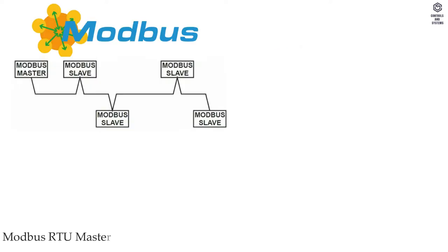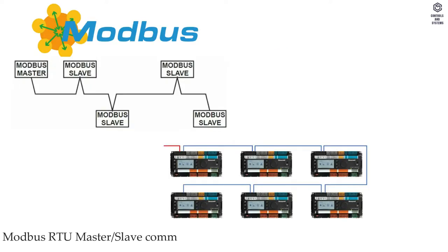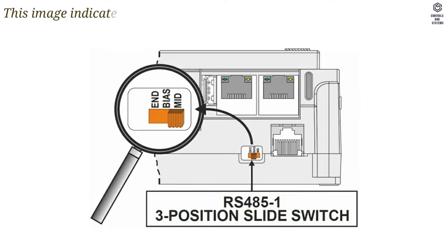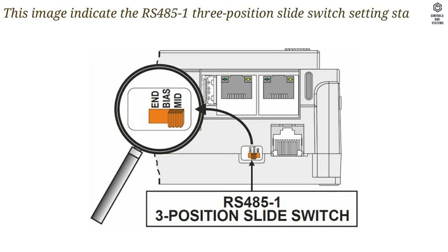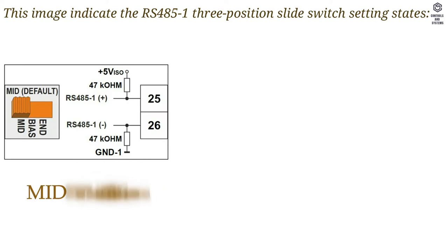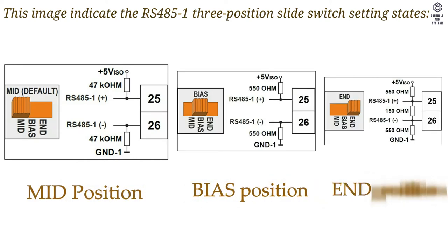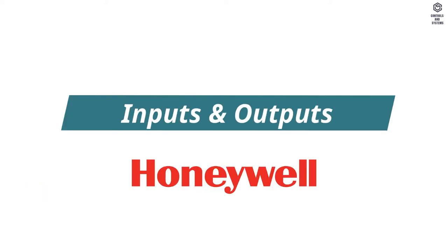Modbus RTU master-slave communication is possible on the two RS-485 interfaces. This image indicates the RS-485-1 3-position slide switch setting states: 1. Mid-position, 2. Bias-position, 3. End-position.